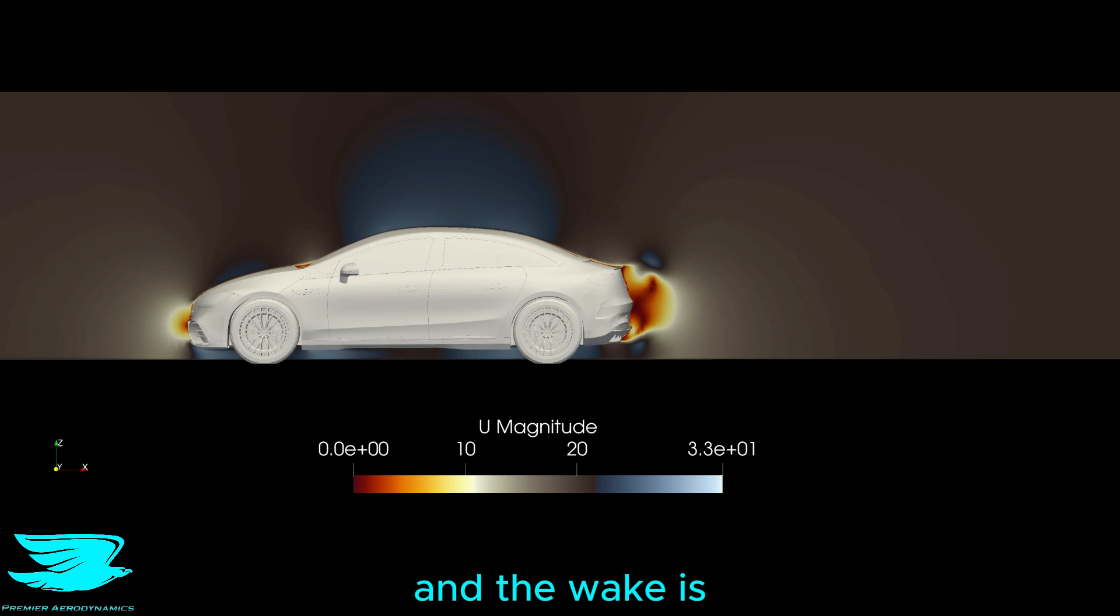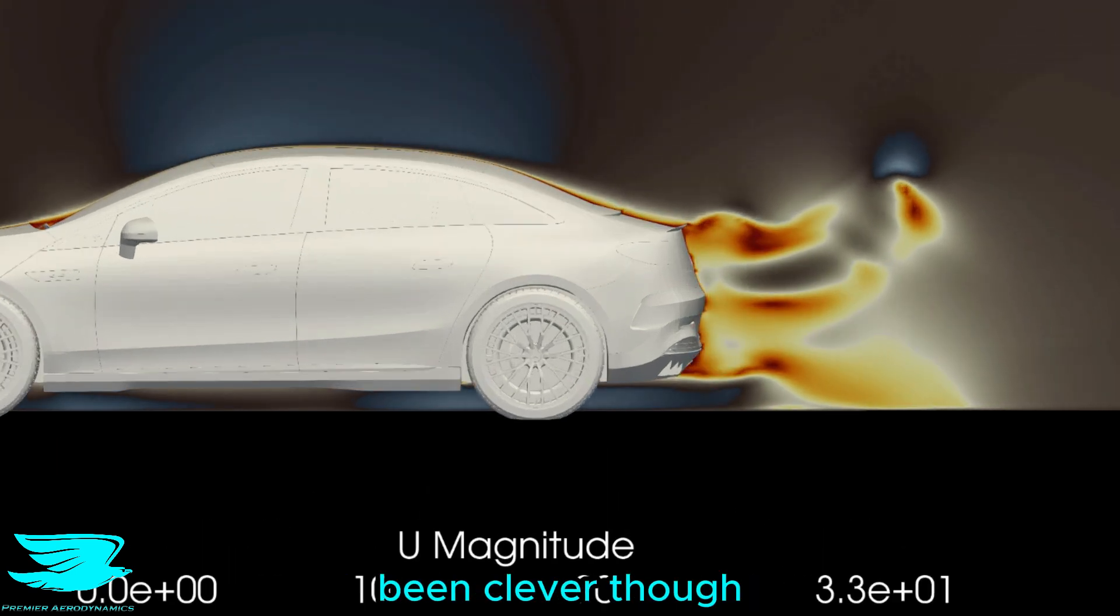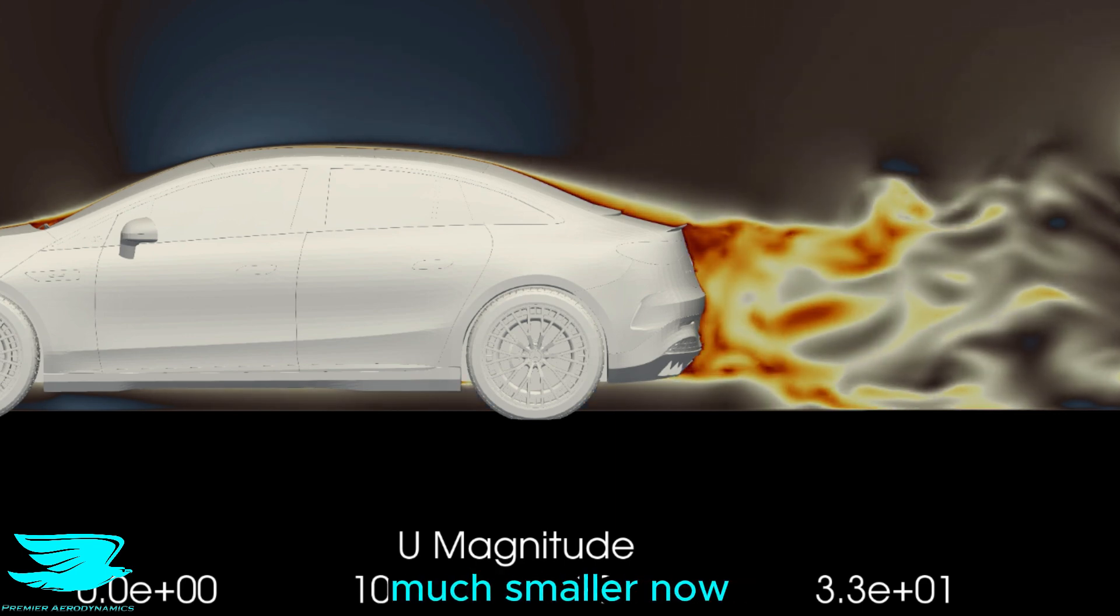This video shows the flow over the car and the wake is pretty much the red parts at the back. These are the bad parts. Mercedes has been clever though and greatly reduced the back area of the car. That immediately reduces the drag because the wake is much smaller now.